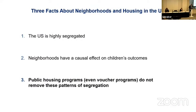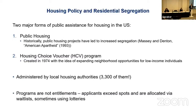It matters where you grow up. Now I want to turn to the question of how that interacts with the policies we have for helping families live in different places. The third fact I want to document is that the existing public housing programs, even the housing choice voucher programs, do very little to remove these patterns of segregation. There are two major forms of public assistance for housing in the United States. First, public housing — think of these as hard units — administered by local housing authorities. There are 3,300 local housing authorities across the United States, each created to manage and build local buildings that they rent out to eligible individuals. This has been historically criticized for creating pockets of concentrated poverty, with large units especially built in the 1950s, 60s, and early 70s.